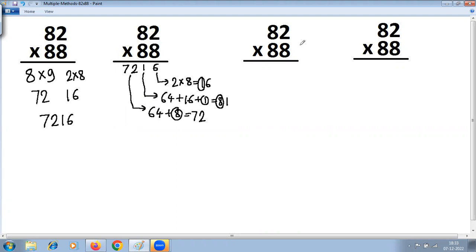88 you can convert as series of 1 by writing 88 as 11 into 8. 11 multiplied by 8 is 88, so here we are going to use series of 1: 82 multiplied by 11.